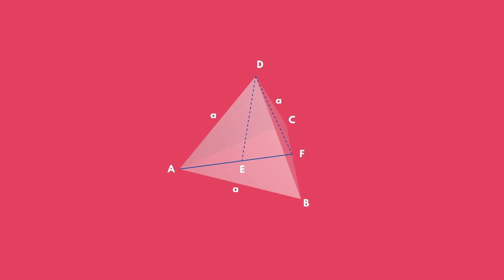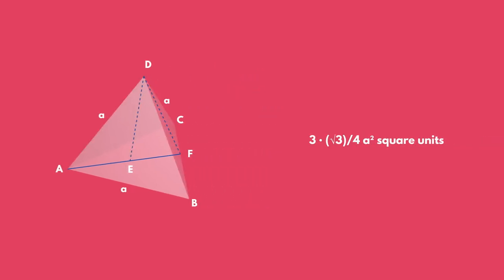Then, area of the slant surface of the regular tetrahedron equals the sum of the areas of three congruent equilateral triangles. Area of the whole surface of the regular tetrahedron equals the sum of the areas of four congruent equilateral triangles. Volume of the regular tetrahedron equals one third by the area of the base by height.